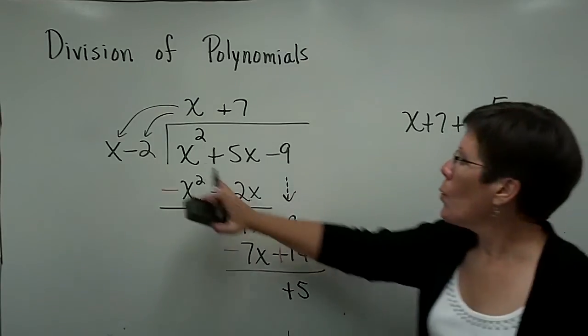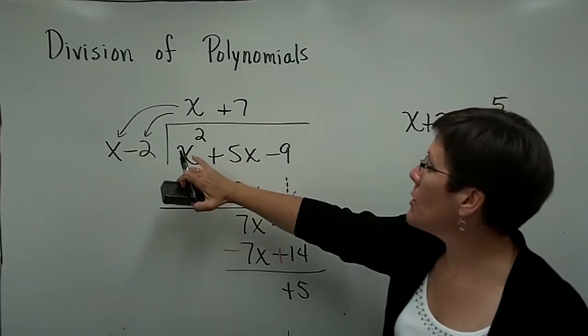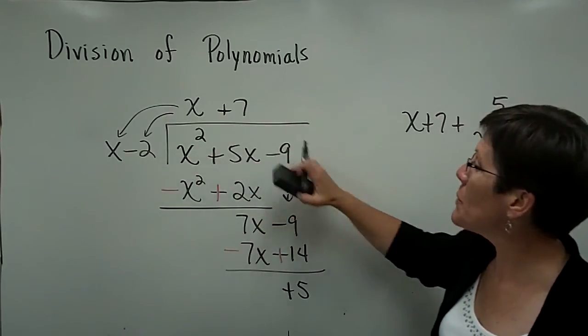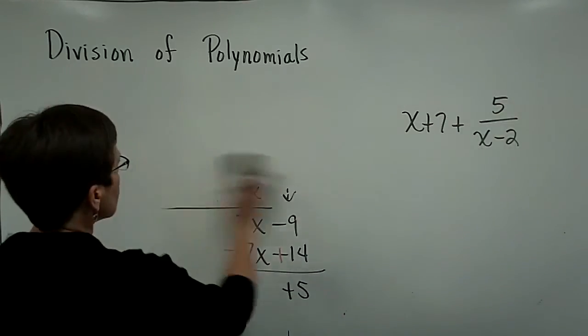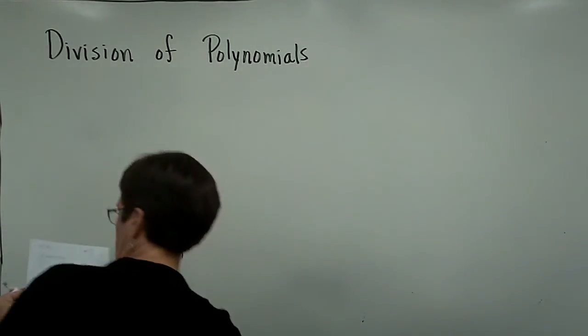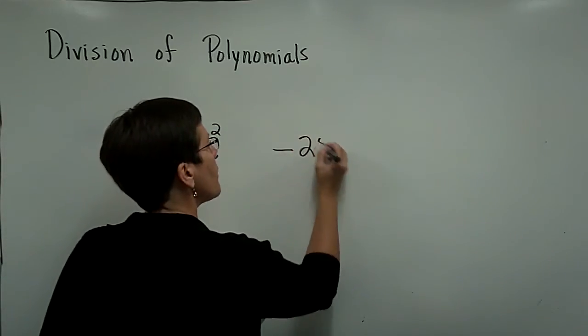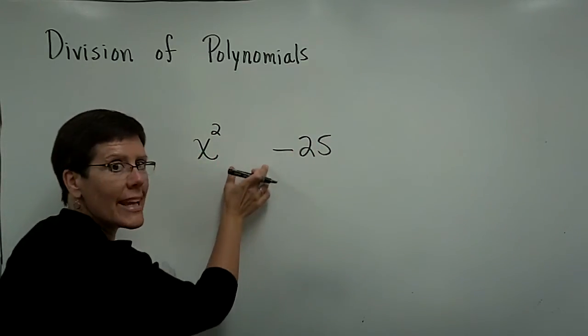Let's try one where I do not have descending order of the exponent. So I don't have x to the second power, x to the first power, and then a constant.